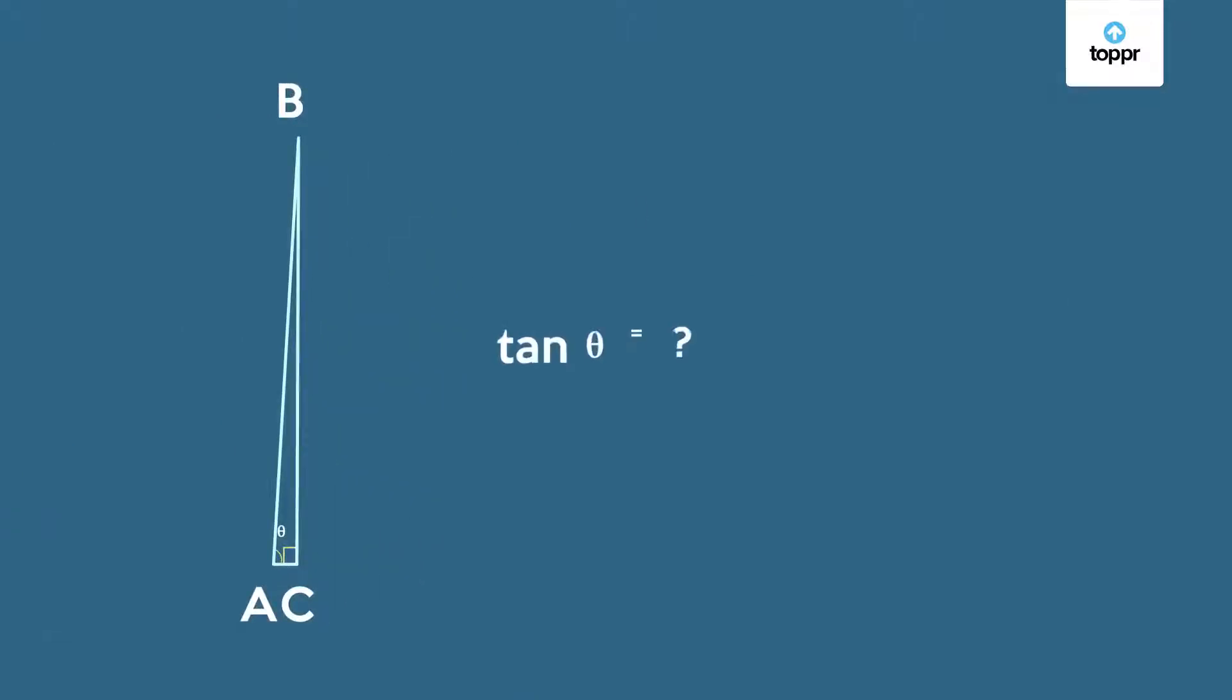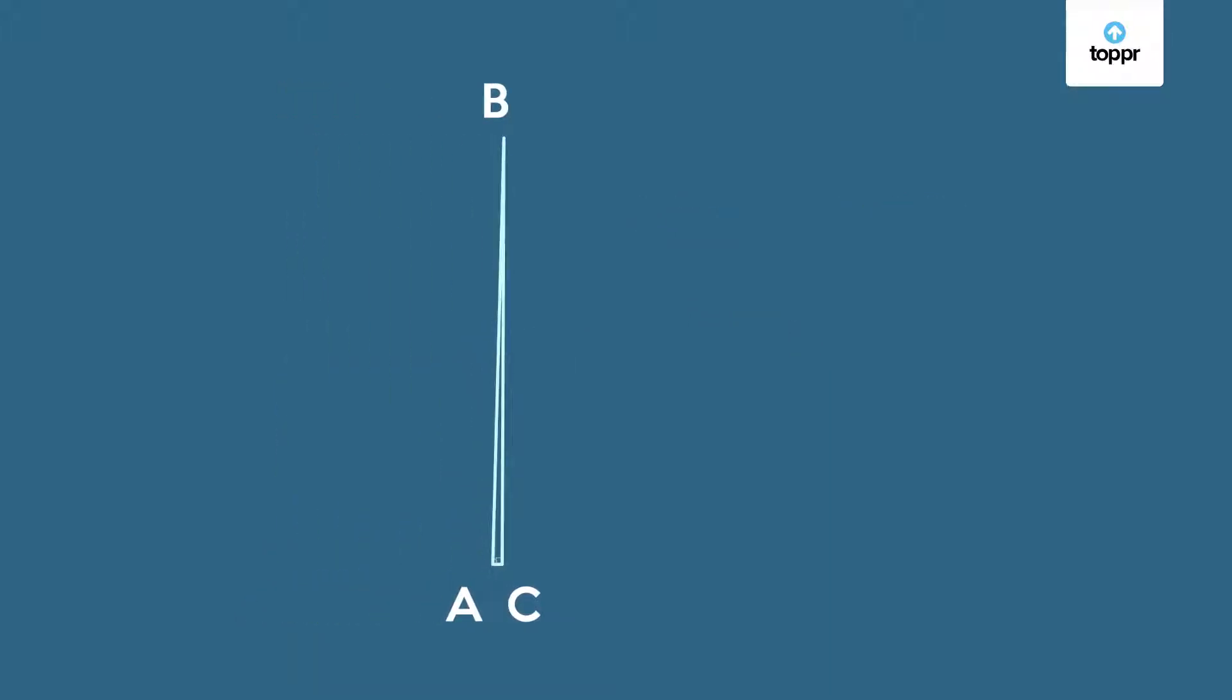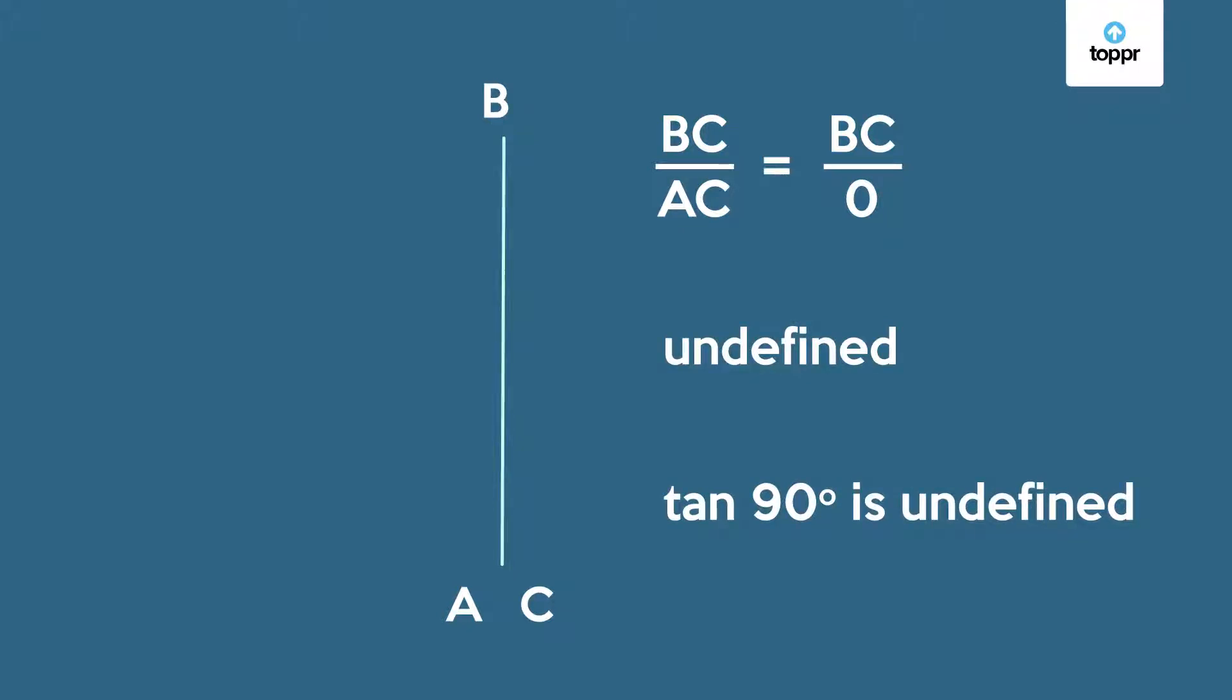What about the tangent? We know that AC is nearly 0 and much smaller than BC. So the ratio BC over AC is now a very large value. Can we define the tangent of 90 degrees? If we try to define it as BC over AC even when there is no triangle, we run into a difficulty. Division by 0 is not defined. So tan 90 is not defined.